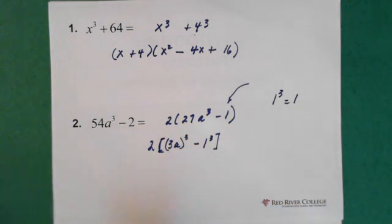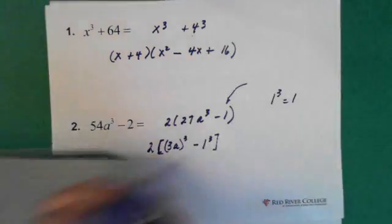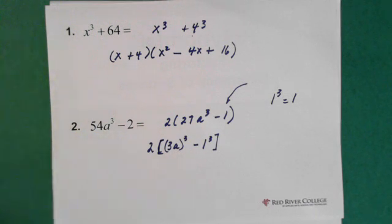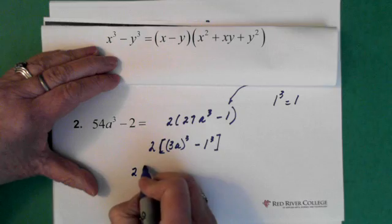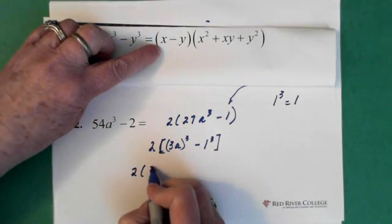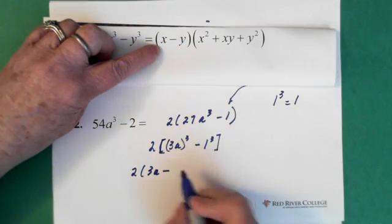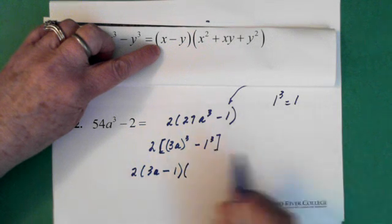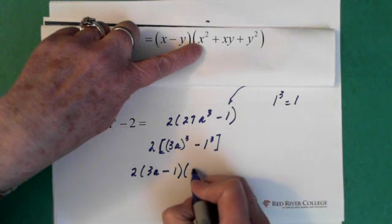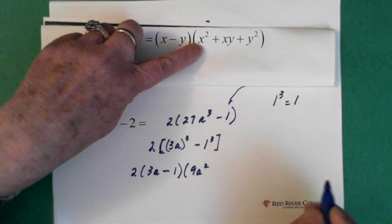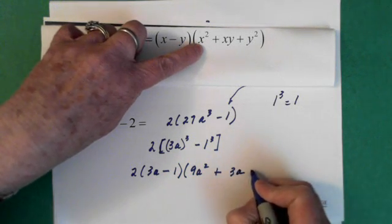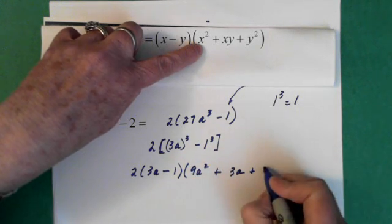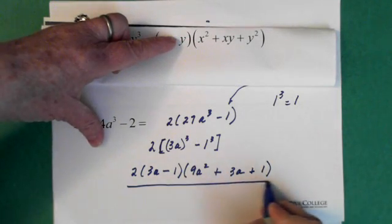Going back to our rule, with 2 out front: the first thing is 3a, minus the second which is 1, times the second bracket — 9a squared, plus 3a times 1 which is 3a, added to 1 squared which is 1. So the answer is 2(3a − 1)(9a² + 3a + 1).